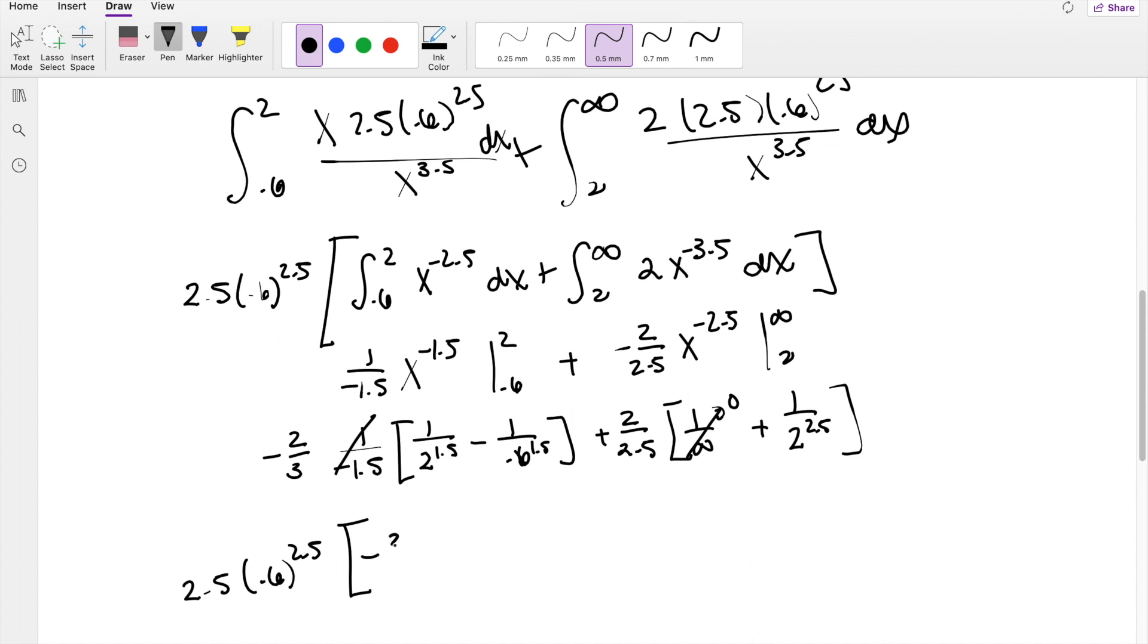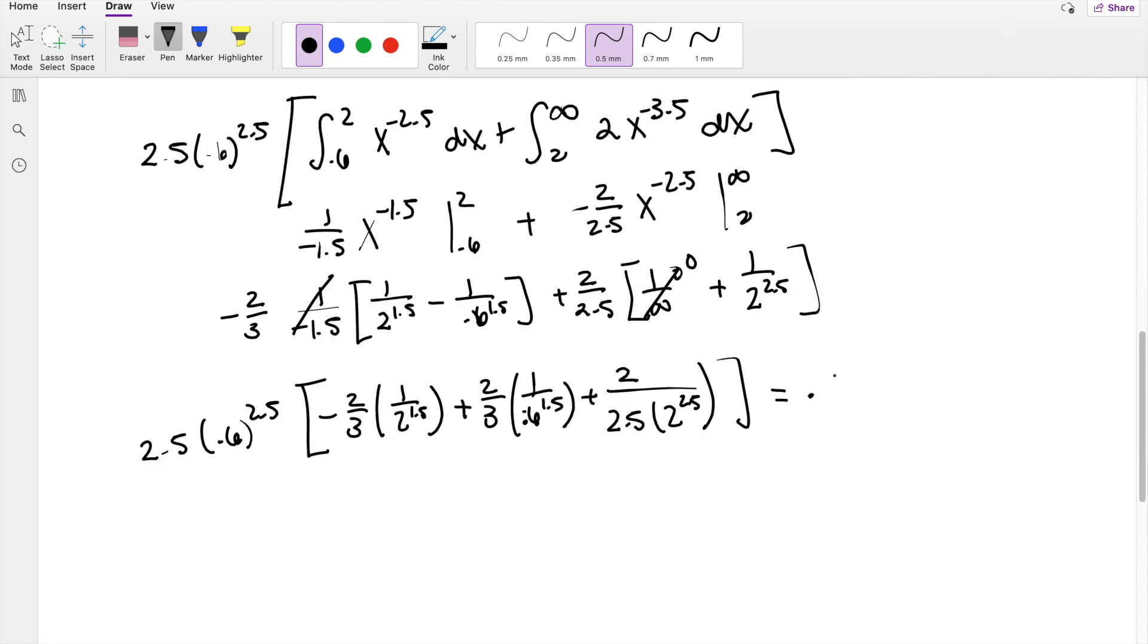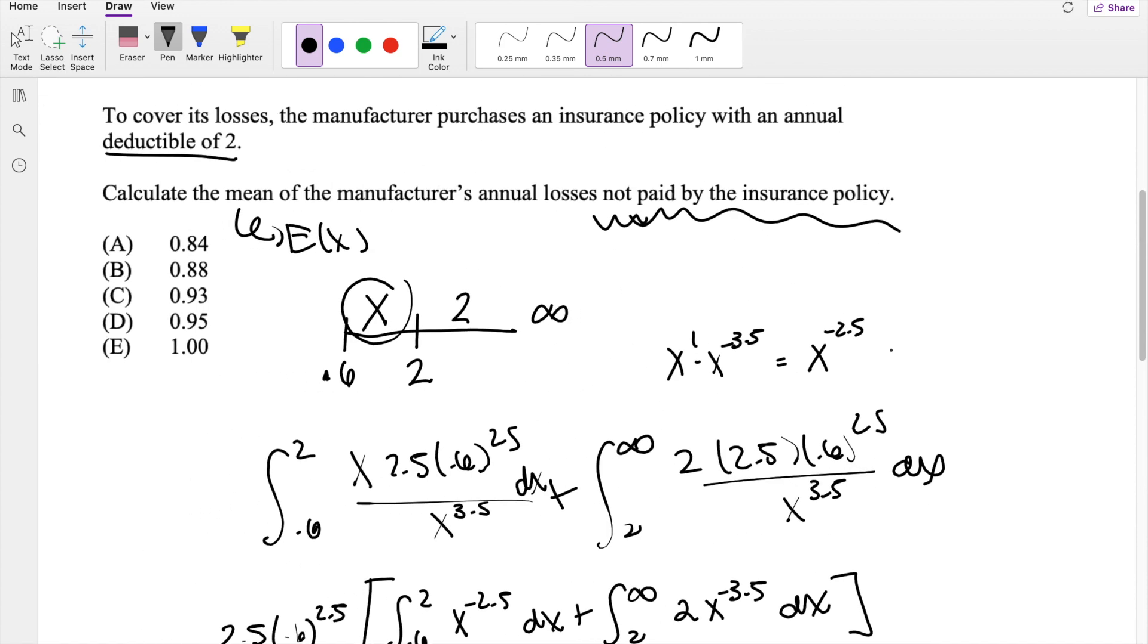So you get left with negative 2 thirds, times 1 over 2 times 1.5, minus minus becomes positive, 2 thirds, times 1 over 0.6 to the 1.5. Here you get plus 2 over 2.5, times 2 to the 2.5, so this is equal to 0.93427, which is our answer C.